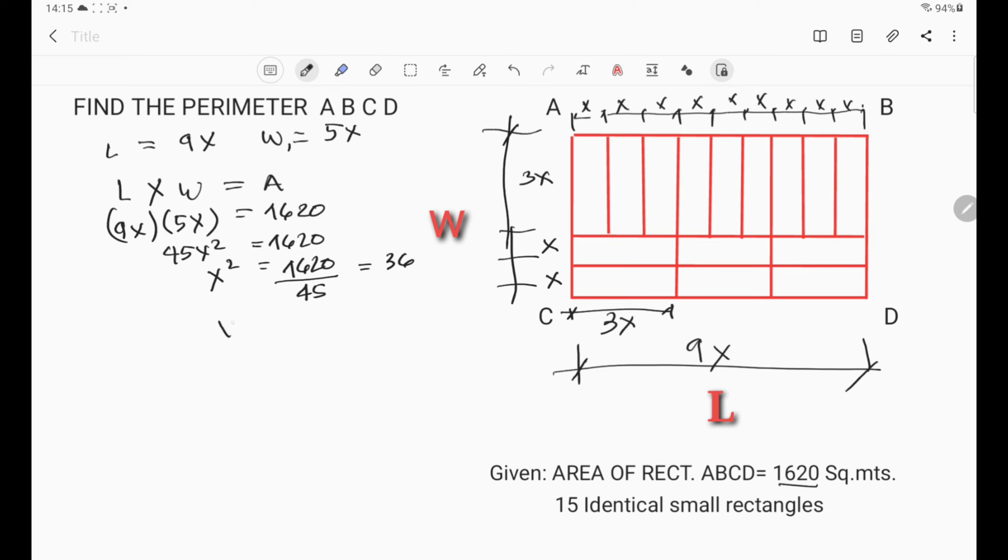So x squared equals 36, and x equals 6 or minus 6. Since the length is positive, we can see that x is equal to 6.